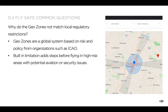People are also sometimes curious why the GeoZones don't match their local regulatory restrictions, which may be different shapes around airports. The GeoZones are a global system based on risk and policy from organizations such as ICAO, and are ultimately a built-in step before flying in high-risk areas with potential aviation or security issues. They're not necessarily customized to specific countries, so that's why you may see some differentiation between your local regulations and the GeoZones.